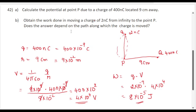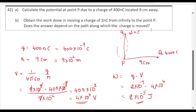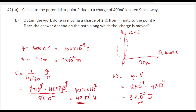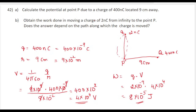Does the answer depend on the path along which the charge is moved? If this charge Q takes any direction to reach point P, the work done will remain the same because work done is Q into V. Q always remains as 2 nanocoulomb and voltage remains the same as 4 into 10 to the power of 4. So the work done will remain the same irrespective of the path taken by the charge Q. The answer will not depend on the path along which the charge is moved.